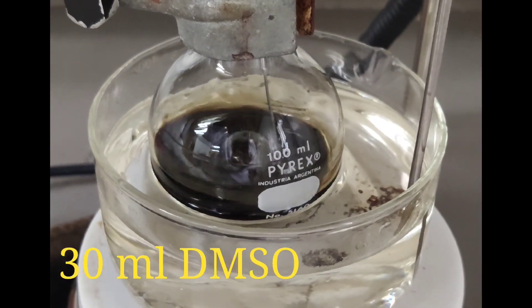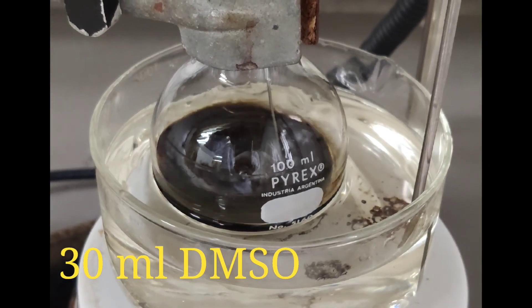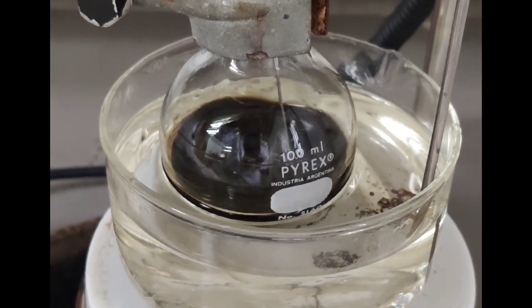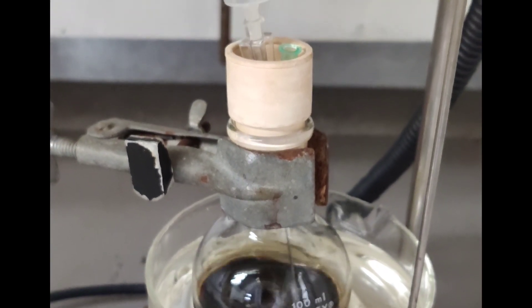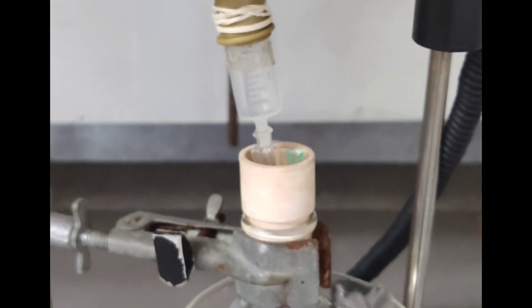We pour the corrole into 30 ml of dimethyl sulfoxide in a round bottom flask and bubble it with nitrogen for about 10 minutes. Then we pour the cobalt acetate and heat up to 80 degrees celsius.